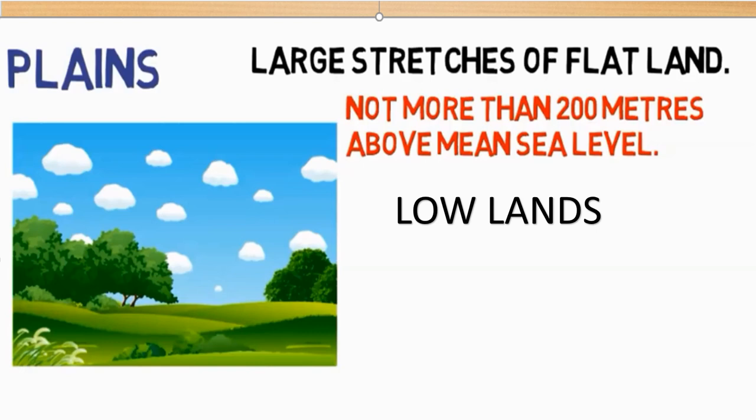Large stretches of flat land are called plains. Plains are generally lowland, with a flat surface, and are major agricultural regions. The majority of the world's population lives on plains. Types of plains include depositional plains, erosional plains, and uplifted plains. Sediment deposited by a river is called alluvium, and plains formed by this process are called alluvial plains. Depositional plains are formed by deposition of sediment. Erosional plains are formed by erosion agents like wind, glaciers, and water. Uplifted plains are formed as a result of ocean floors being uplifted by tectonic forces, raising the earth's surface above sea level.